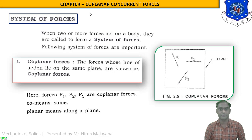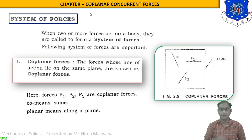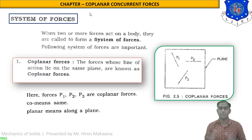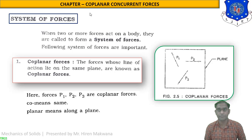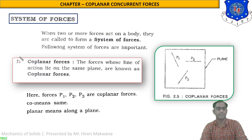When two or more forces act on a body, they are called a system of forces. If two, three, or any number of forces are acting on a body, they comparatively form a system of forces. There are six to seven types of system of forces which are very important from the subject point of view.